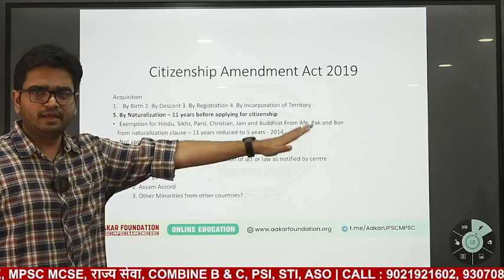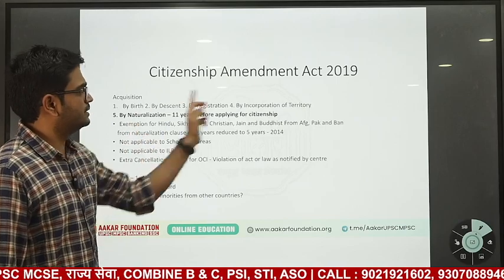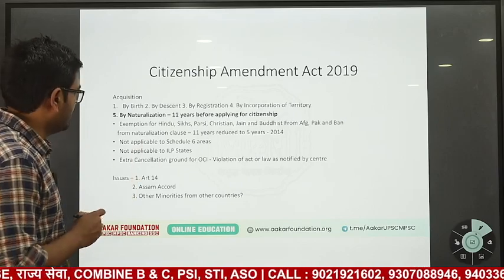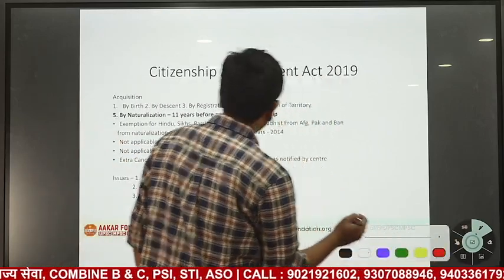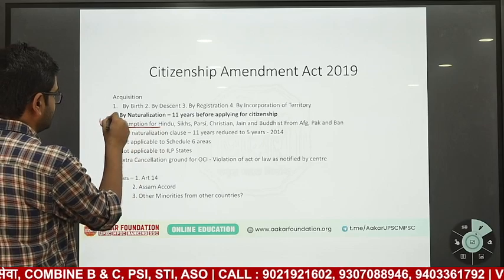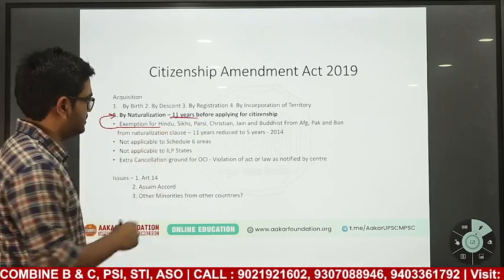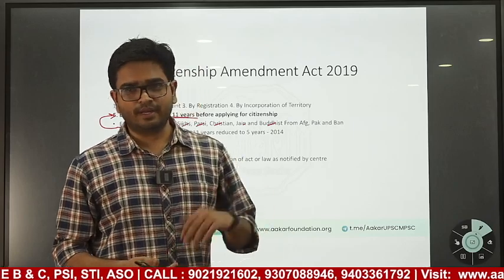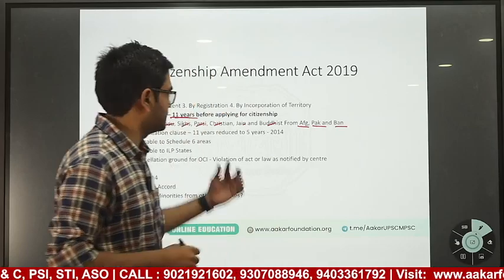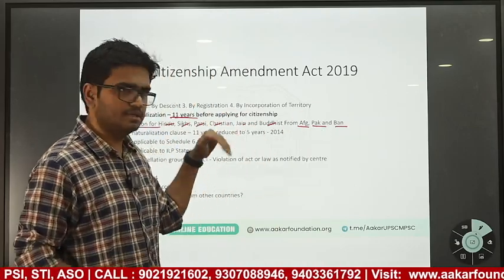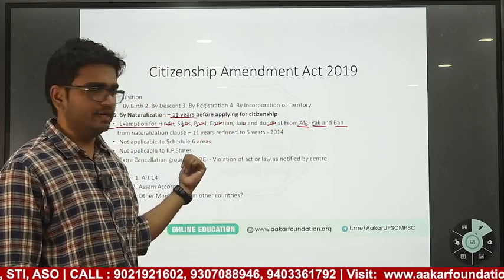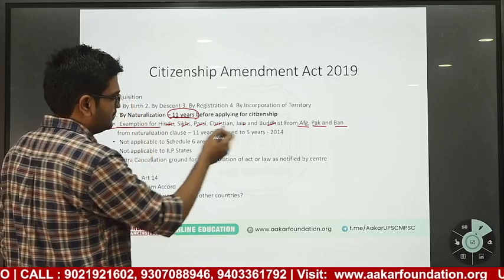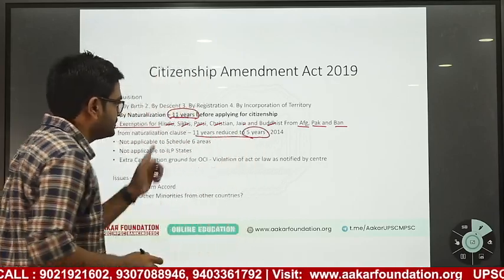By naturalization is a process for any person, not necessarily a PIO or OCI cardholder. You can become a citizen of India by naturalization if you stay in India for at least 11 years before applying for citizenship. This is the naturalization clause for any person. The Citizenship Amendment Act made a change to this: it exempted six religions — Hindus, Parsis, Christians, Jains, Buddhists — who are illegal immigrants arriving in India from Afghanistan, Pakistan, and Bangladesh. These six religions from these three countries are exempted from the naturalization clause.